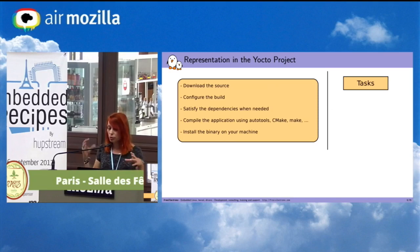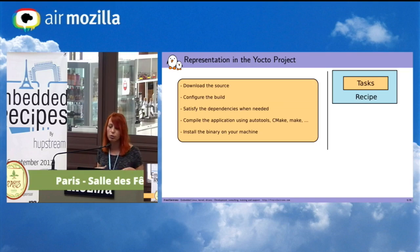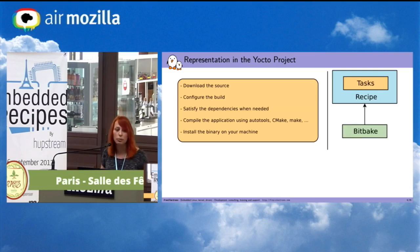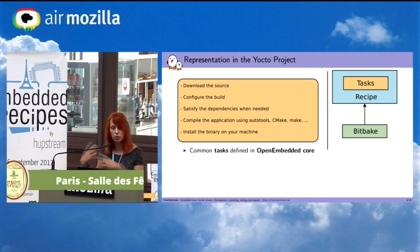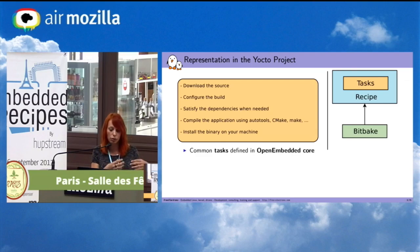These tasks are described in files that we call .bb files. You need a tool to parse the content of the file, to know what to do with each task, and to compile a final image. This tool is called BitBake. There are some common tasks defined in OpenEmbedded Core. For example, when you are downloading the source of an application, it's pretty much the same for many applications, so you can create a common task in OpenEmbedded Core.